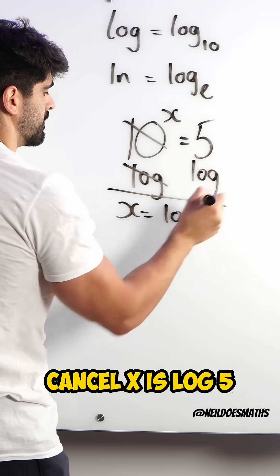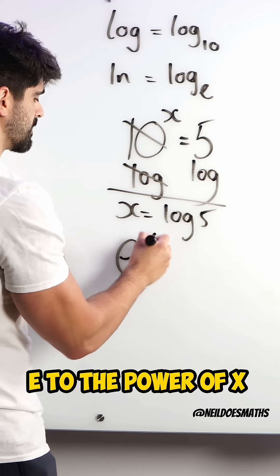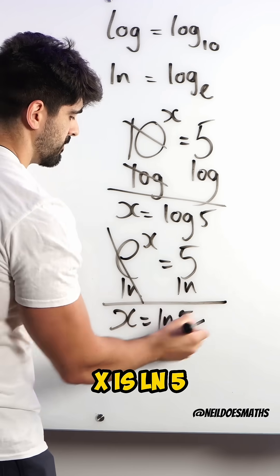With this, we use ln when we're specifically dealing with e. E to the power of x is 5. I would ln both sides. Ln cancels e. X is ln 5. Nice.